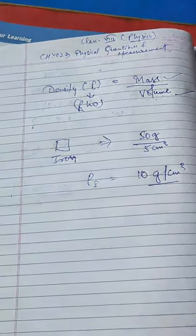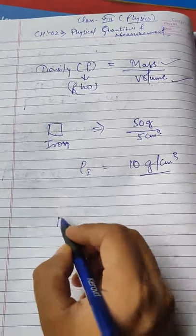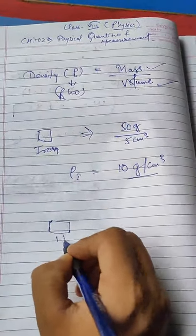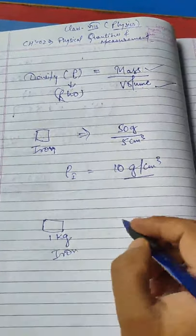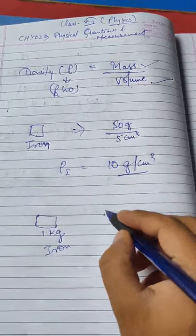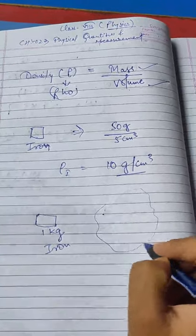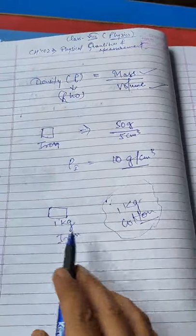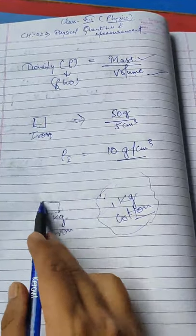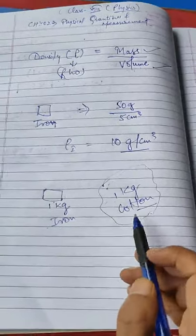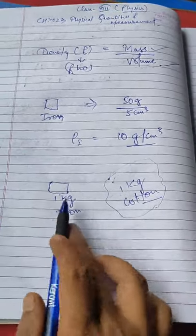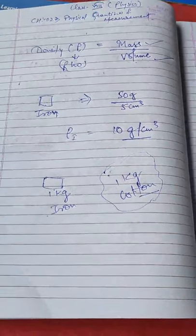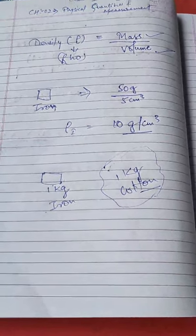Different materials have different densities. For example, suppose we have 1 kg of iron and 1 kg of cotton. Cotton is very light. Although both have the same mass of 1 kg, their volumes are very different — the iron piece occupies a small volume while the cotton occupies a large volume. So two substances having the same mass can have different volumes.